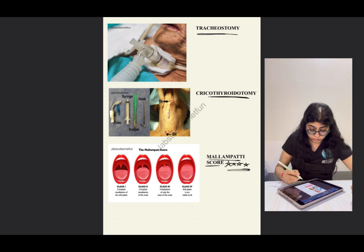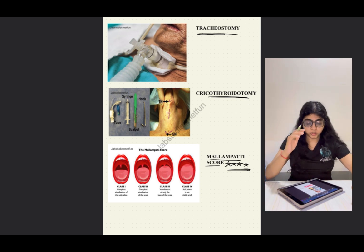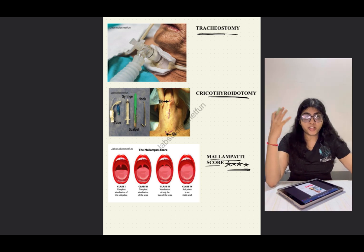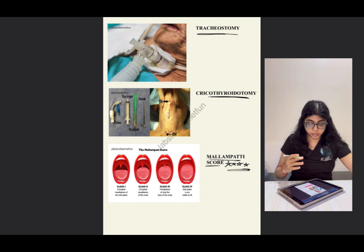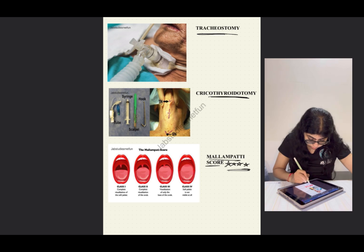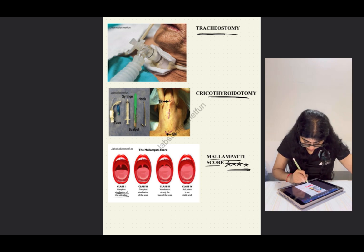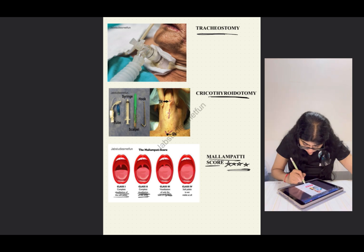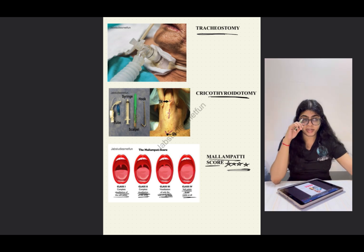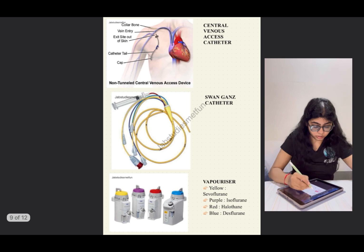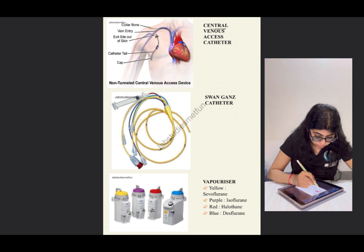The Mallampati score is a very important image frequently asked in exams. Class 1 allows complete visualization of the soft palate. Class 2 allows visualization up to the uvula. Class 3 shows only the base of the uvula. Class 4 is where the soft palate is not visible at all. These are the four mouth-opening classifications of the Mallampati score.